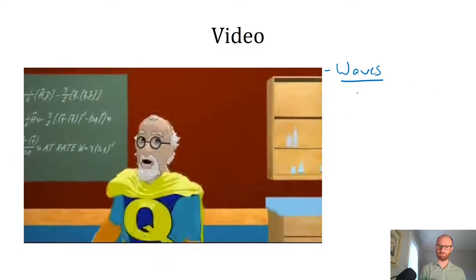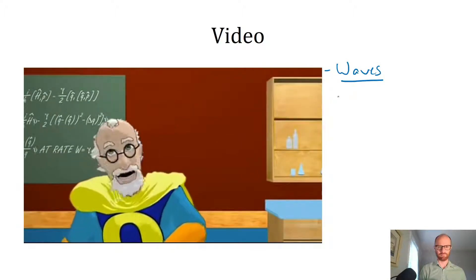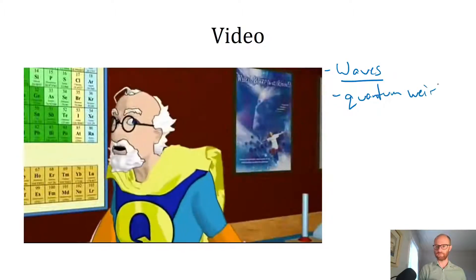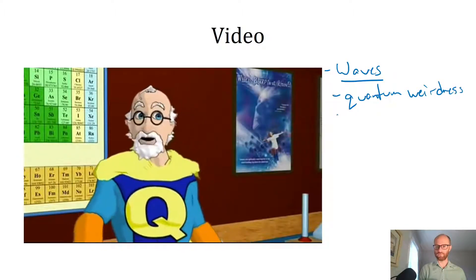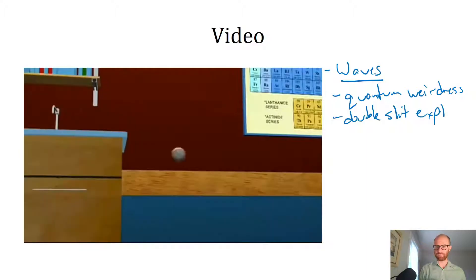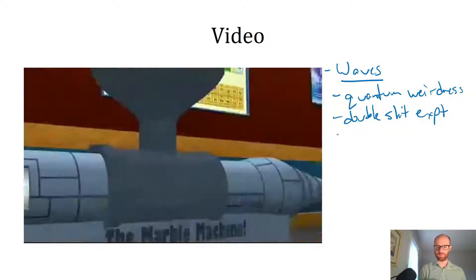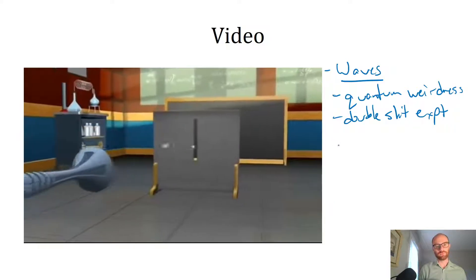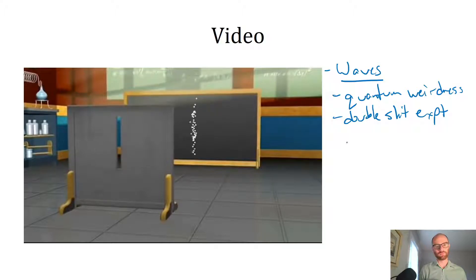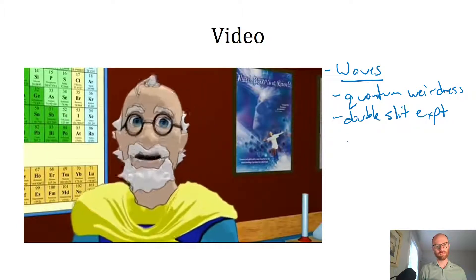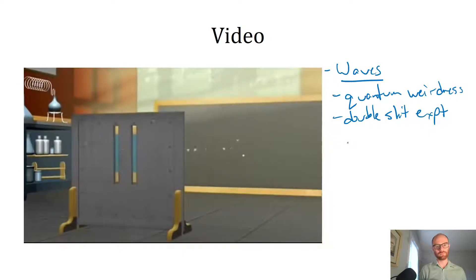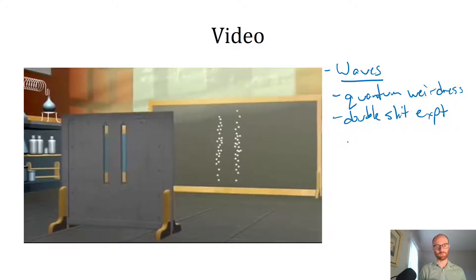Here we are, the granddaddy of all quantum weirdness: the infamous double-slit experiment. To understand this experiment, we first need to see how particles, or little balls of matter, act. If we randomly shoot a small object, say a marble, at the screen, we see a pattern on the back wall where they went through the slit and hit. If we add a second slit, we would expect to see a second band duplicated to the right.